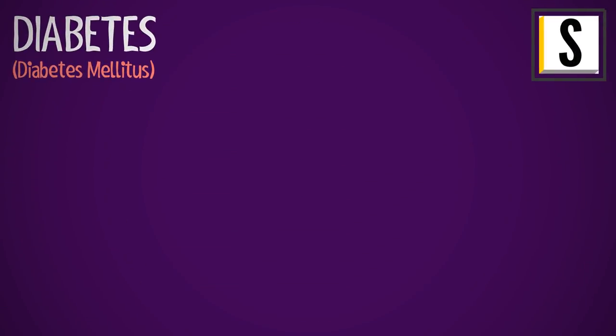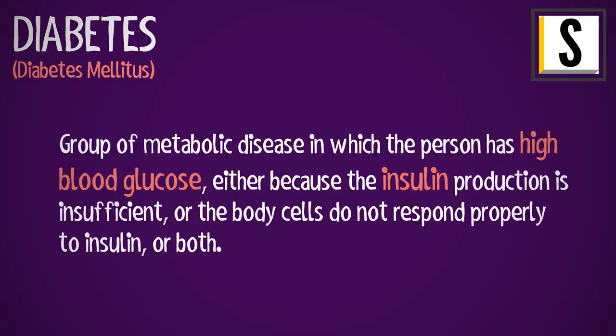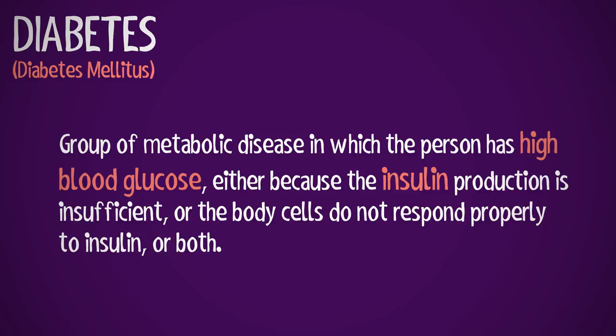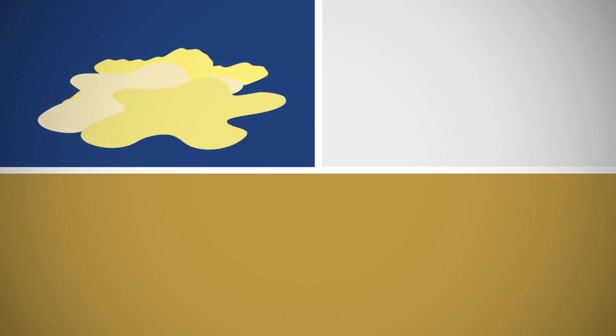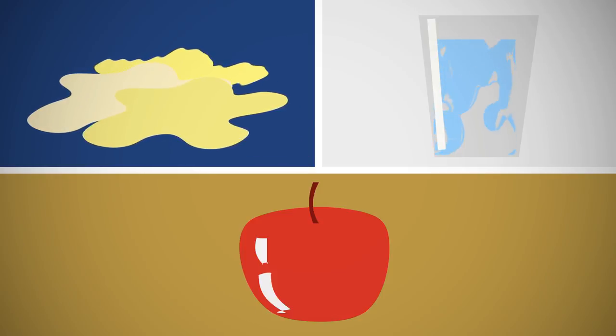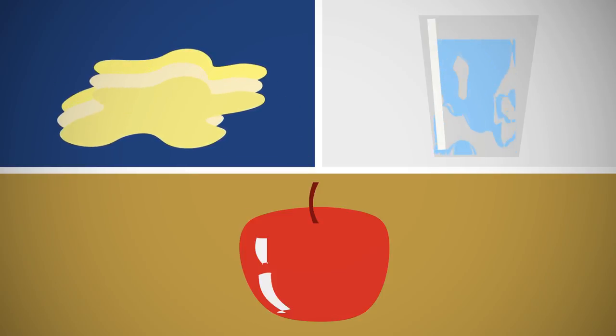Diabetes, or diabetes mellitus, is described as a group of metabolic diseases in which the person has high blood glucose — either because insulin production is insufficient, or because the body cells do not respond properly to insulin, or both. Symptoms of high blood sugar include frequent urination, increased thirst, and increased hunger.